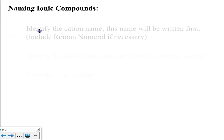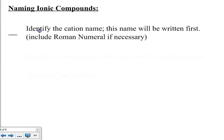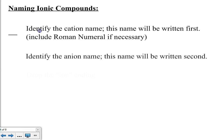Naming these compounds: first you identify the cation name — this name will be written first. You'll need to include Roman numerals if necessary. You'll identify the anion name — this name will be written second. You drop the ion ending. It's very simple and straightforward so long as you know the names of the ions, which is why we've spent time asking you to memorize the names of all those ions.